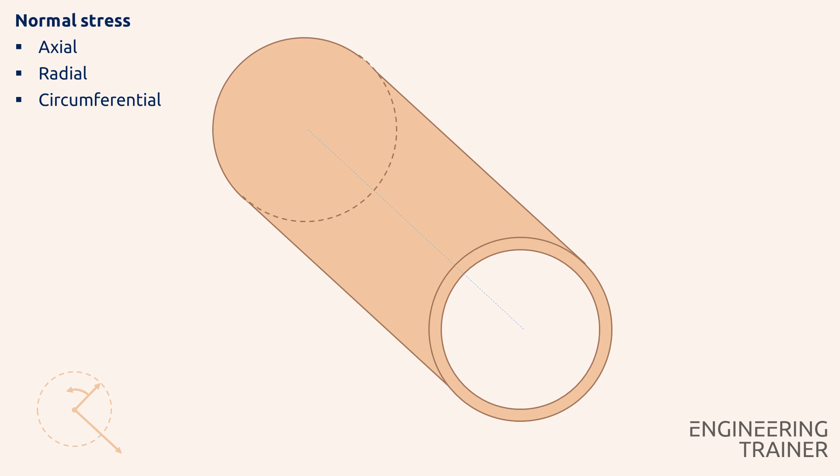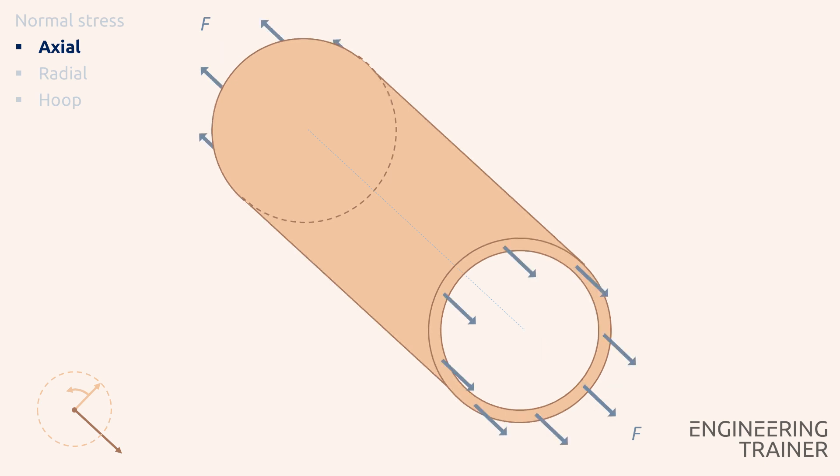In piping disciplines, the circumferential direction is often referred to as the hoop direction. Let's take a closer look at each normal stress, starting with the axial one. Axial loads on a pipe are obviously applied to the outer pipe wall.